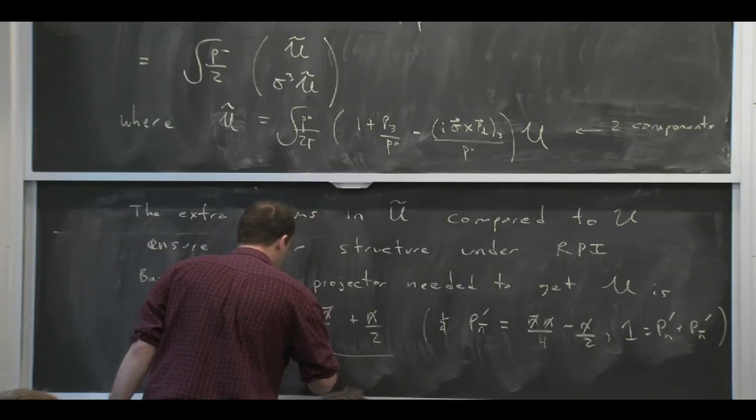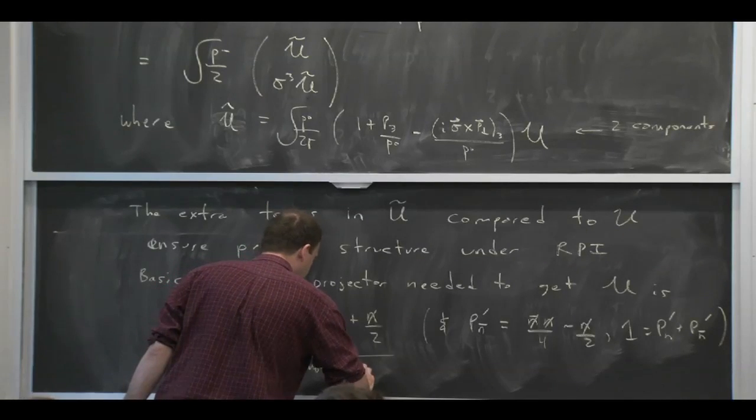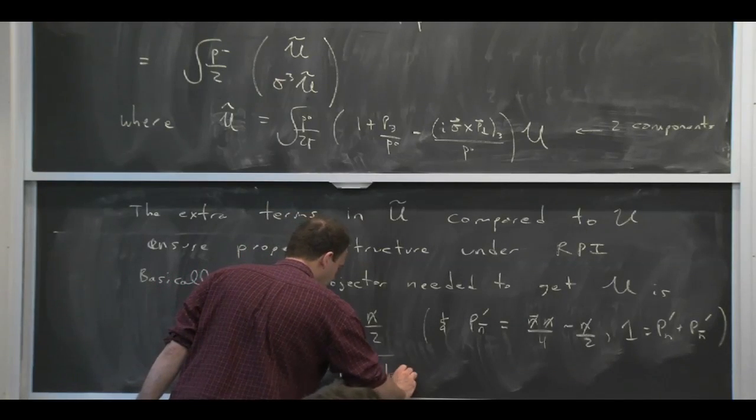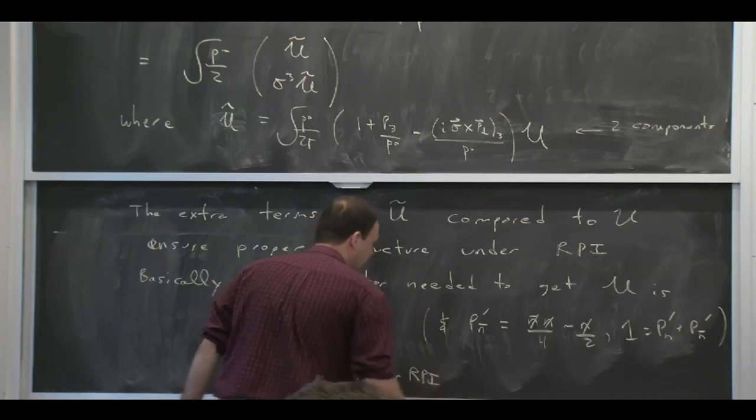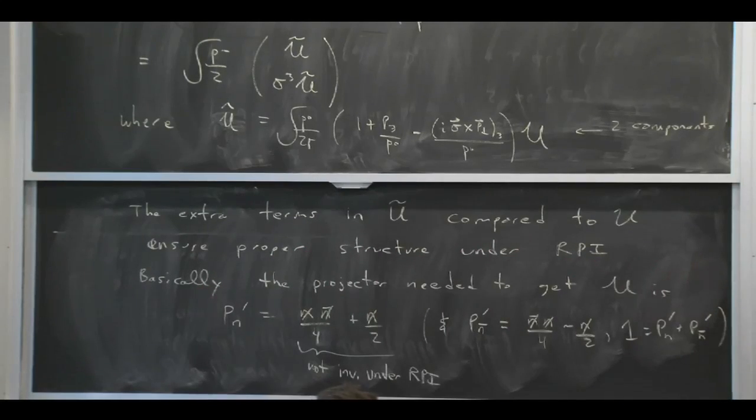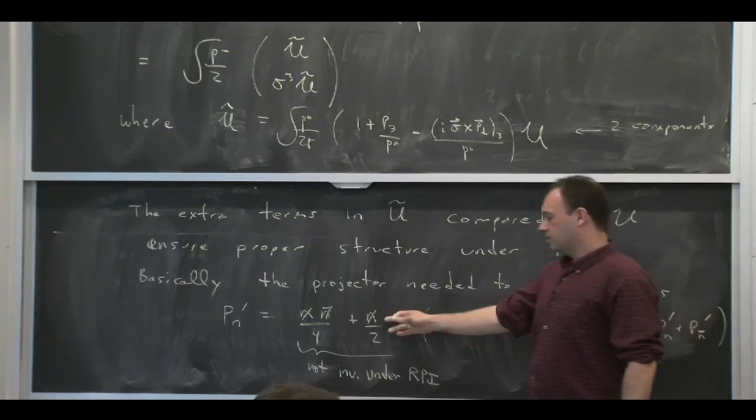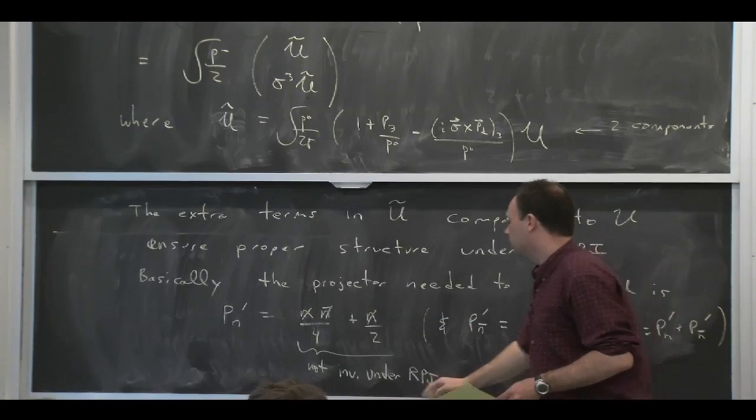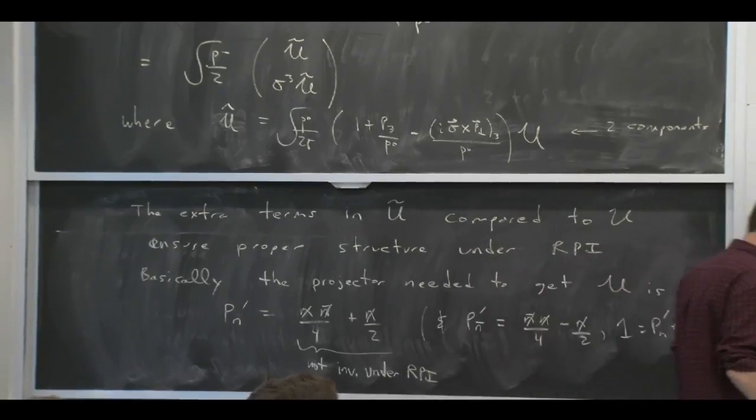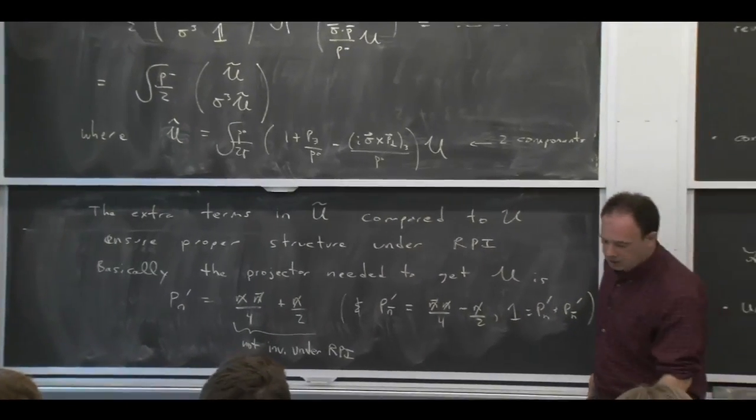So you just have to believe me. I don't want to go through the algebra. Or you can check it yourself. But this projector here is not invariant under that symmetry of reparameterization invariance. So when we talk about RPI, it'll be clear why we want a projector, which is this projector, and not the slightly different projector, which has this extra n slash over 2.